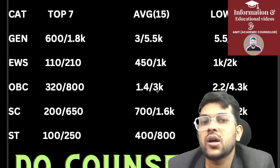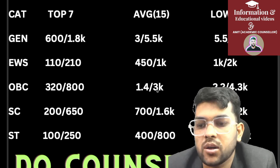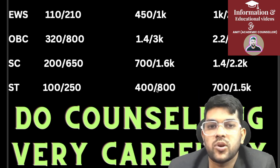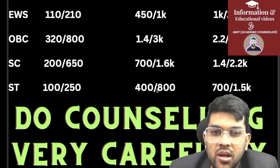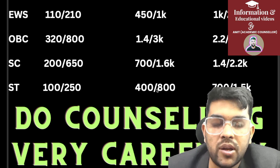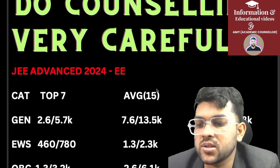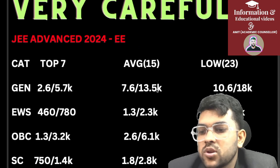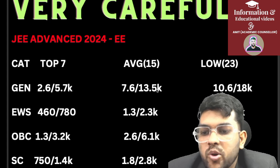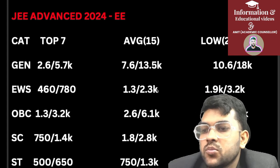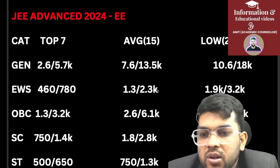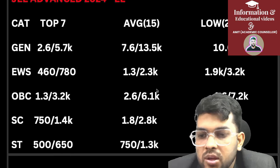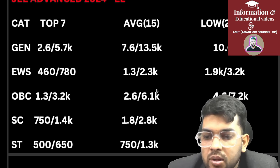Your category rank is used for IIT allocation in JOSAA counseling, so counseling is very important — don't lose your hard work by making a mistake in the process. For Electrical Engineering: General — Top 7: 2,600 to 5,700; Top 15: 7,600 to 13,500; Lower 23: 10,600 to 18,000. EWS: Top 7 — 460 to 780; Top 15 — 1,300 to 2,300; Lower — 1,900 to 3,200. OBC: Top 7 — 1,300 to 3,200; Top 15 — 2,600 to 6,100; Lower — 4,600 to 7,200. SC: Top 7 — 750 to 1,400; Average — 1,800 to 2,800; Lower — 2,600 to 3,700. ST: Top 7 — 900 to 1,400.